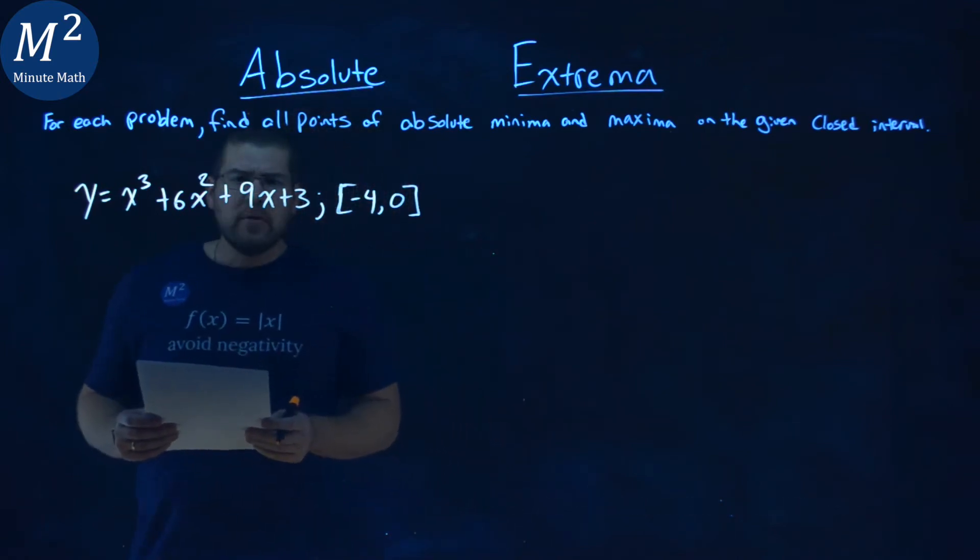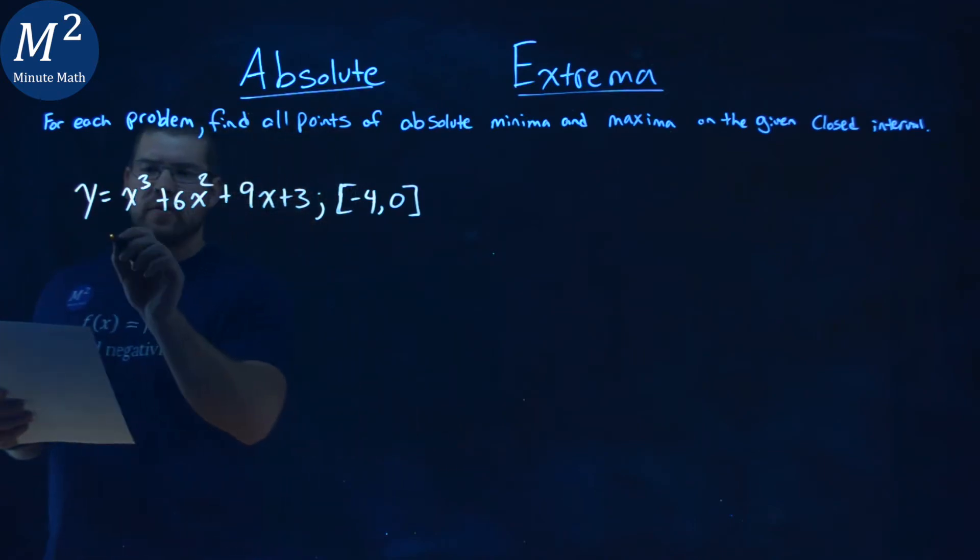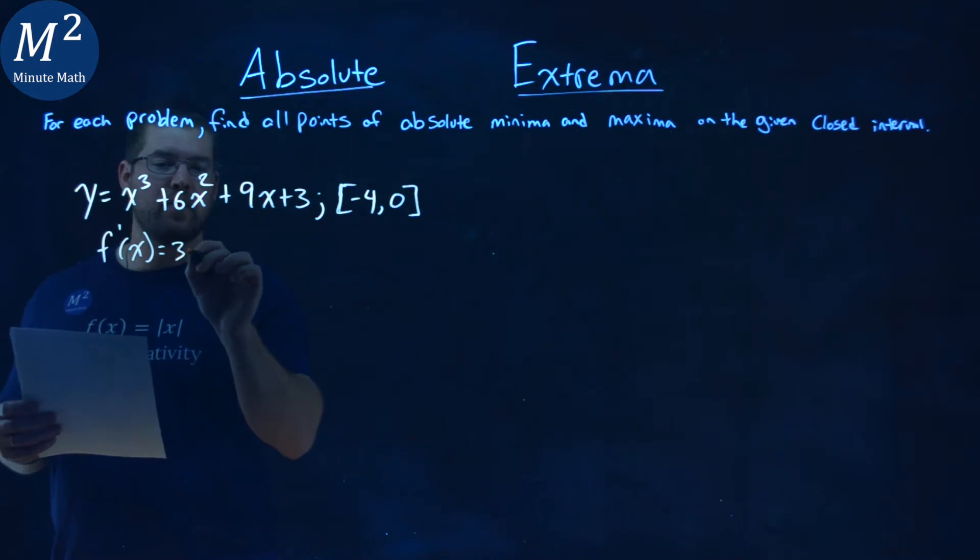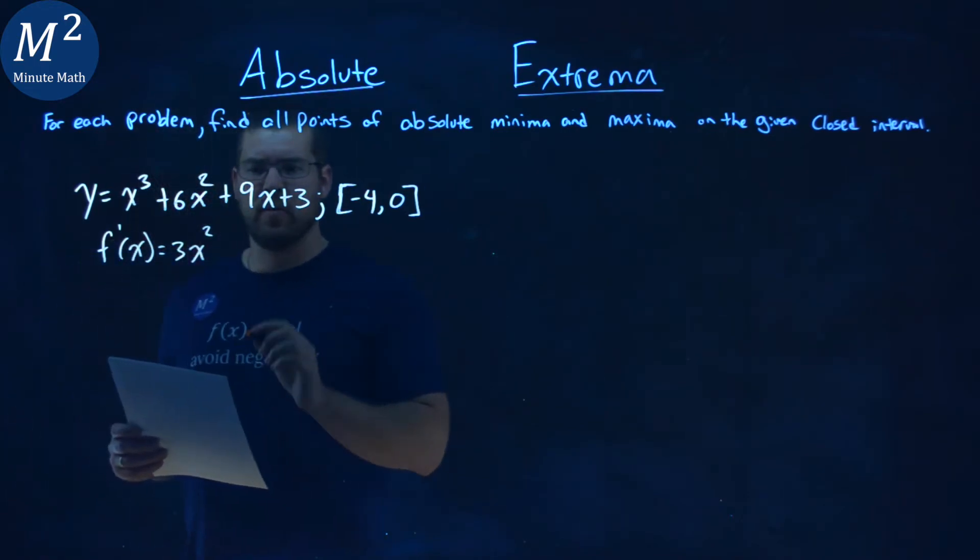Now, I first want to find my derivative. So f prime of x here, let's use our power rule. 3 comes down, 3x squared, subtract the exponent by 1.